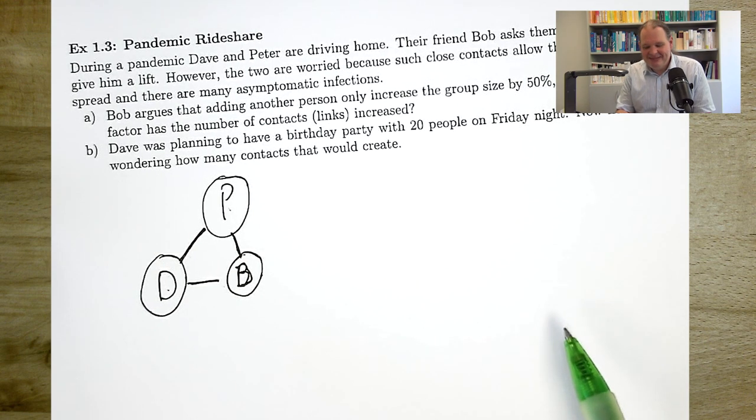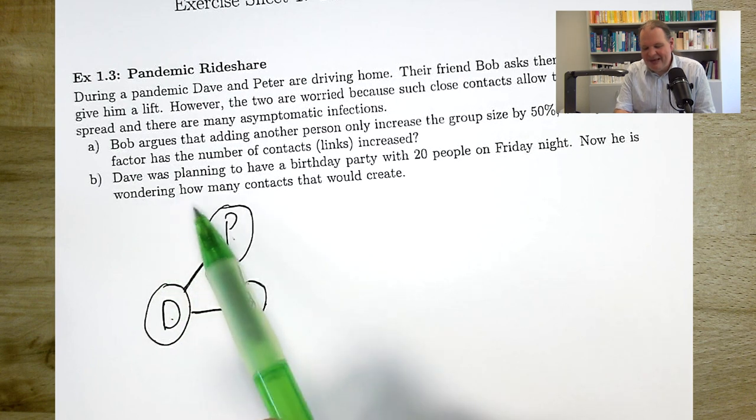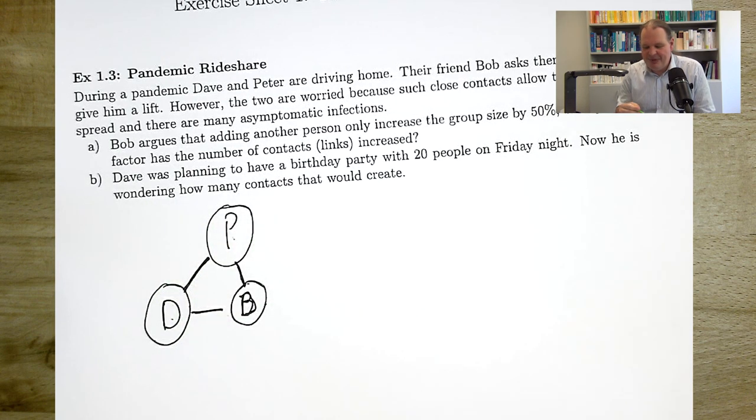Interesting, isn't it? Let's see what the second part says. Dave was planning to have a birthday party with 20 people on Friday night. Now he is wondering how many contacts that would create. Again, if you want to try it yourself, now is your chance to pause the video. And now, let's do it together.